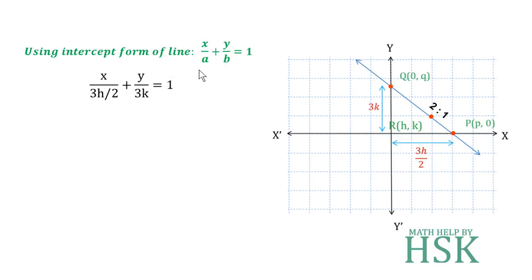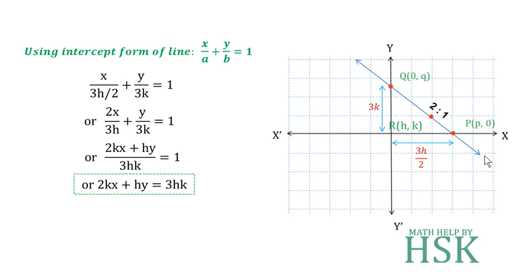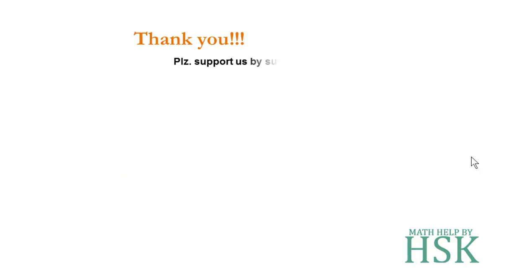Placing a = 3h/2 and b = 3k, I get 2x/(3h) + y/(3k) = 1. Cross-multiplying gives us the final equation of the line such that point h,k divides the portion of the segment between the axes in the ratio 1 is to 2. This is the required answer.